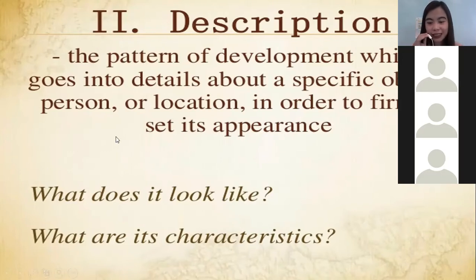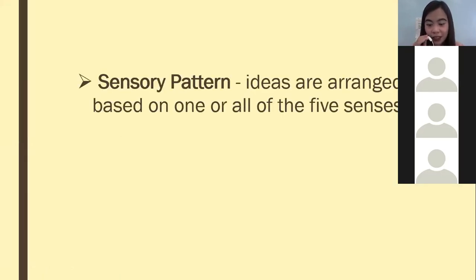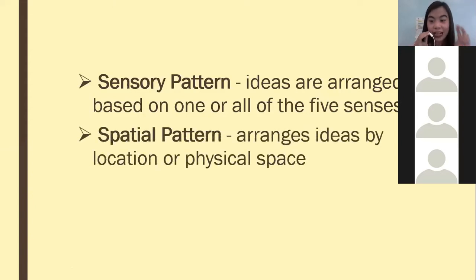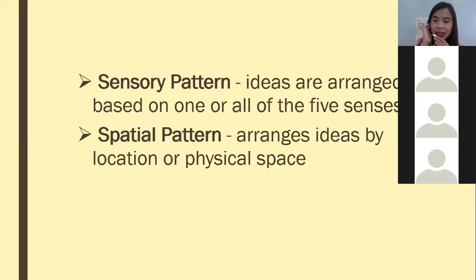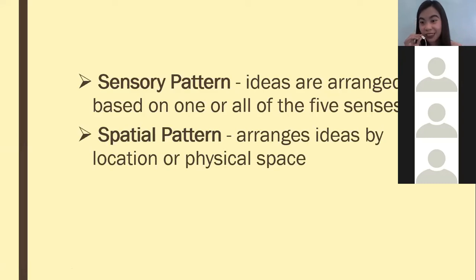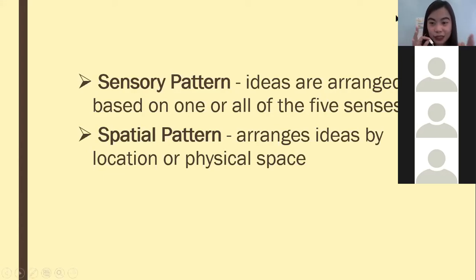We have two kinds of description: sensory pattern and spatial pattern. In the sensory pattern, ideas are arranged based on one or all of the five senses — what you see, smell, hear, taste, or feel. For example: color red, big, small, soft. In the spatial pattern, ideas are arranged by location or physical space — the distance of an object or a place.